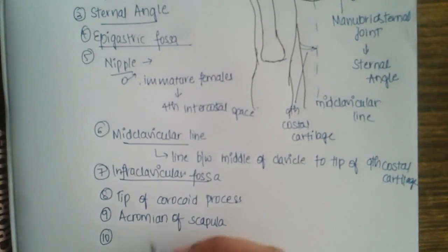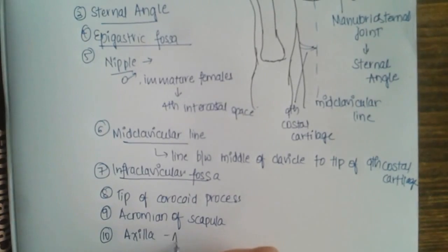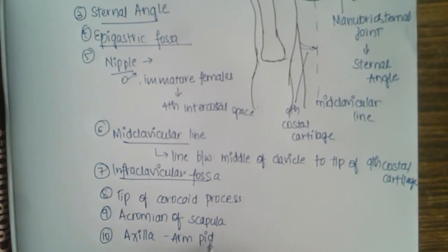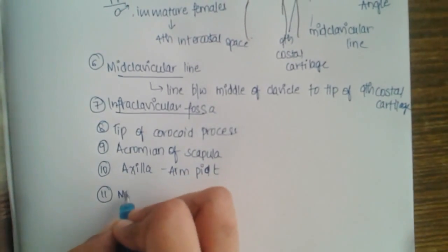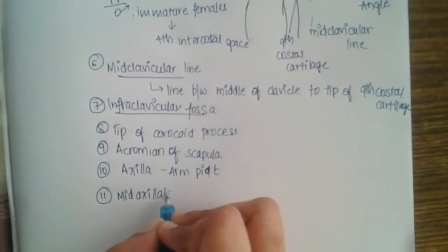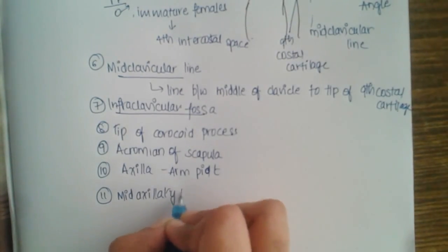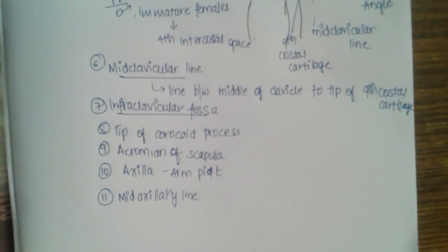The tenth landmark is the axilla, which is nothing but the armpit. And the final one is the mid-axillary line — this is the line drawn at the middle of the axilla.